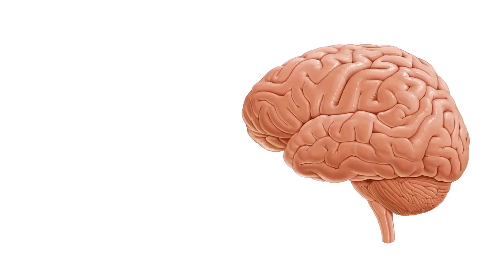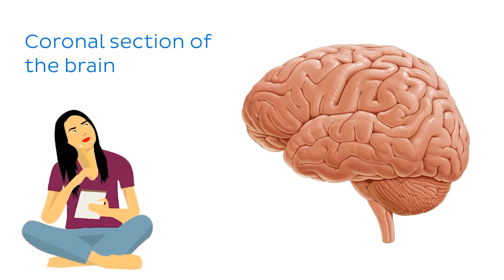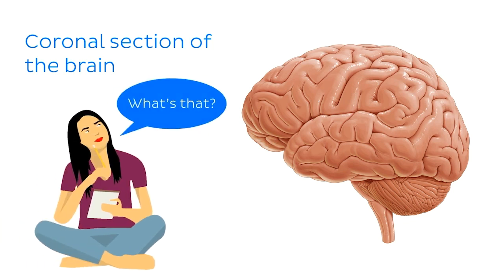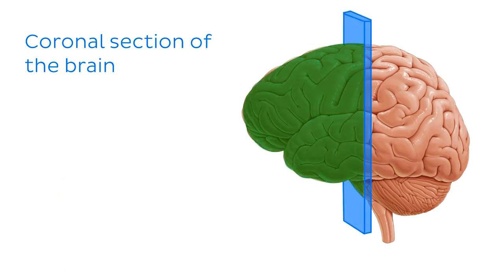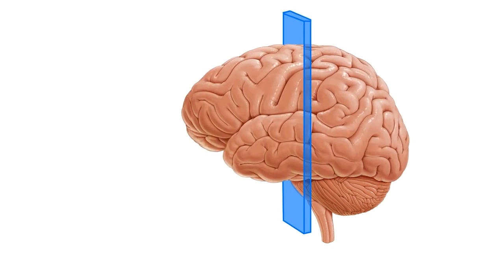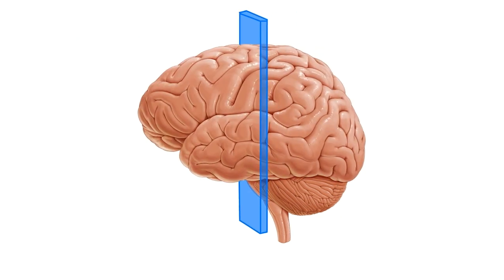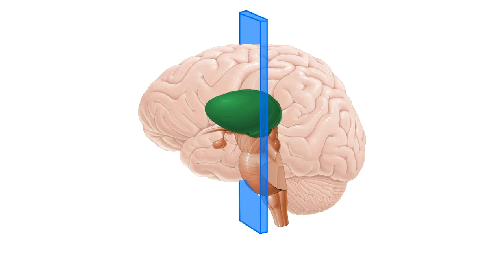So today, we're going to be exploring the structures visible in a coronal section of the brain. A coronal, or frontal, section is a vertical slice of the brain which divides the brain into anterior and posterior parts. And of course, we'll be making our cut at the level of the thalamus.